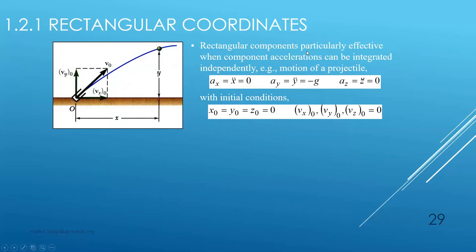Rectangular components are particularly effective when acceleration components can be integrated independently — for example, in projectile motion. Here the acceleration in the x direction ax is equal to zero, and we only have acceleration in the y direction due to gravity. The z direction points out of the page so it is not relevant. Initial conditions start from point (0, 0, 0), so x₀, y₀, and z₀ are all zero, and initial velocity is also zero.